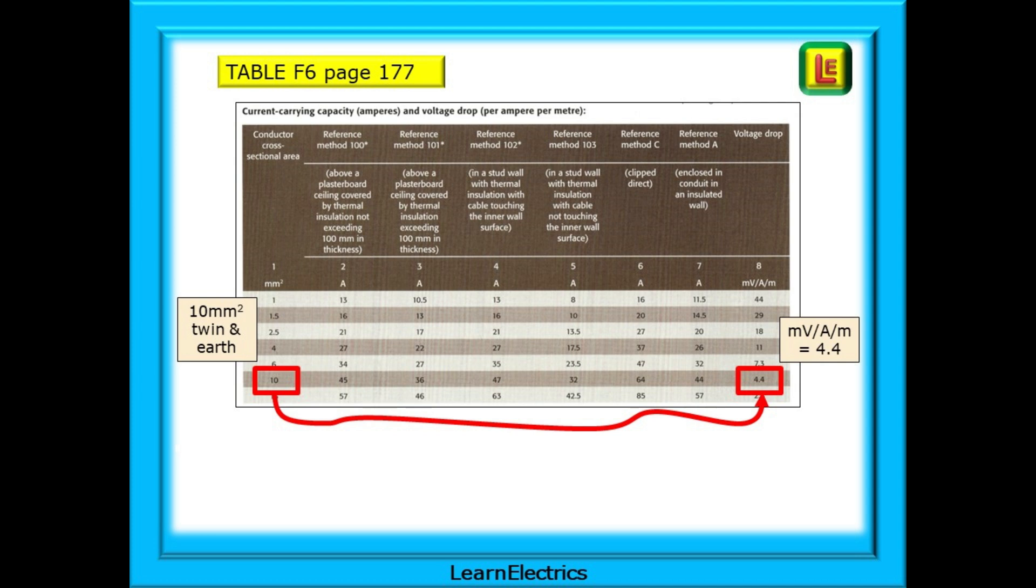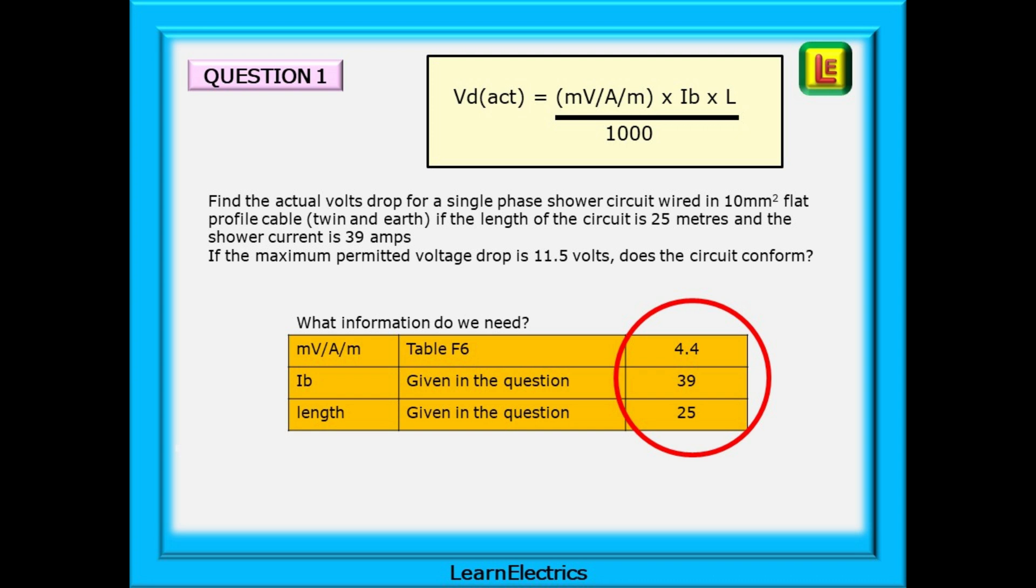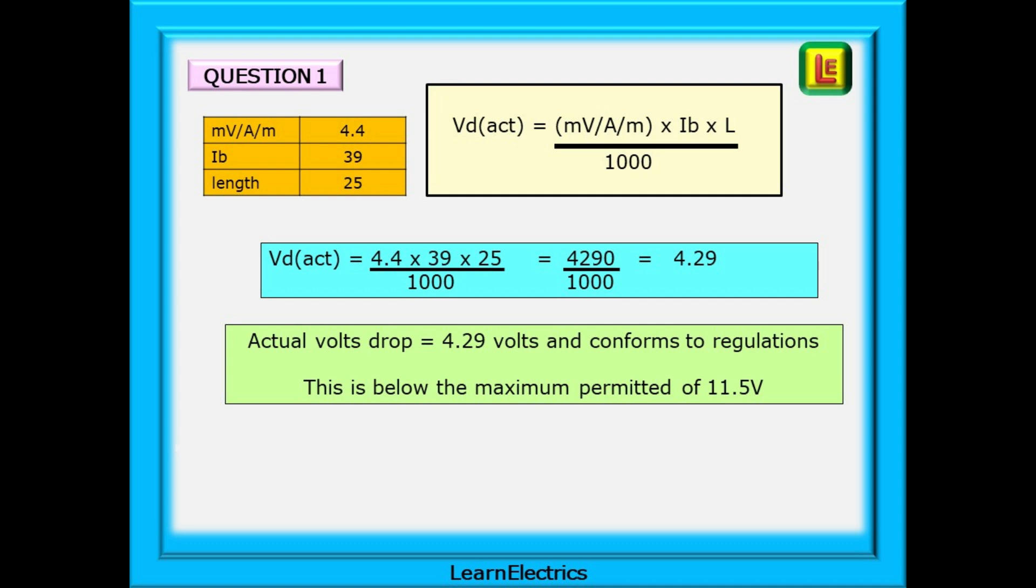I always make a small chart or list of the information that I need to know before I can answer the question. And we need to know three things here. Table F6 on page 177 will give us the millivolts per amp per meter. While using 10mm cable, find this on the left and then move to the rightmost column and find 4.4. That is the MVAM number for 10mm copper conductor. IB and the length are given in the question and the rest is easy now. Put the numbers into the formula as shown and out pops the answer 4.29. The actual volts drop is 4.29 volts and conforms to regulations as this is below the maximum permitted voltage drop of 11.5 volts.